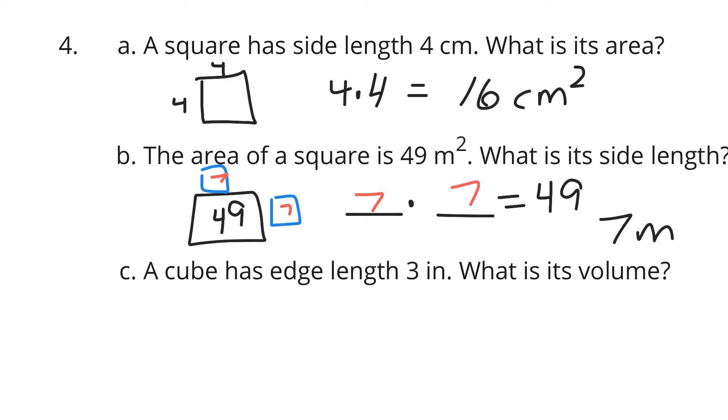And then a cube has an edge length of 3 inches. What is its volume? Well, just like our first question, volume is equal to edge length or side cubed, and so that's going to be 3 cubed, which is 3 times 3 times 3, which results in 27 cubic inches.